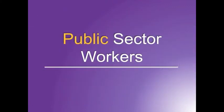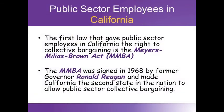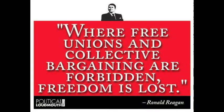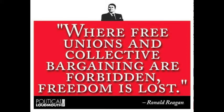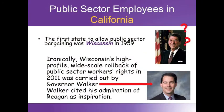The first law that gave public sector employees in California the right to collective bargaining was the 1968 Meyers-Milias-Brown Act. The MMBA was signed by Governor Ronald Reagan, who at one time was a union president himself when he was a member of the Screen Actors Guild. The MMBA made California the second state in the nation to allow public sector collective bargaining. The first state was Wisconsin in 1959.